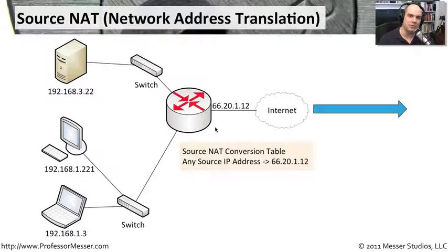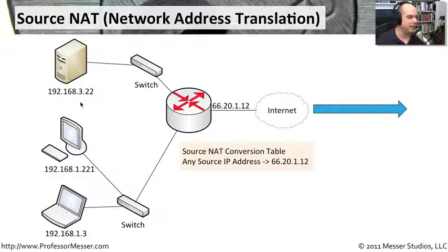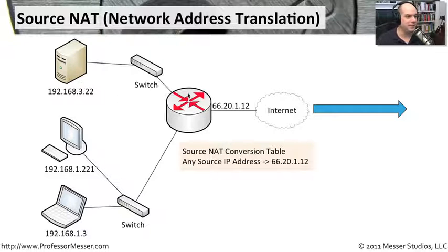It's the job of this device that's providing that translation to keep track of who has been translated to where. So when that response comes back from Google, that firewall looks through its table and says, who did I NAT out to Google to begin with? Oh, I NATed 192.168.3.22.